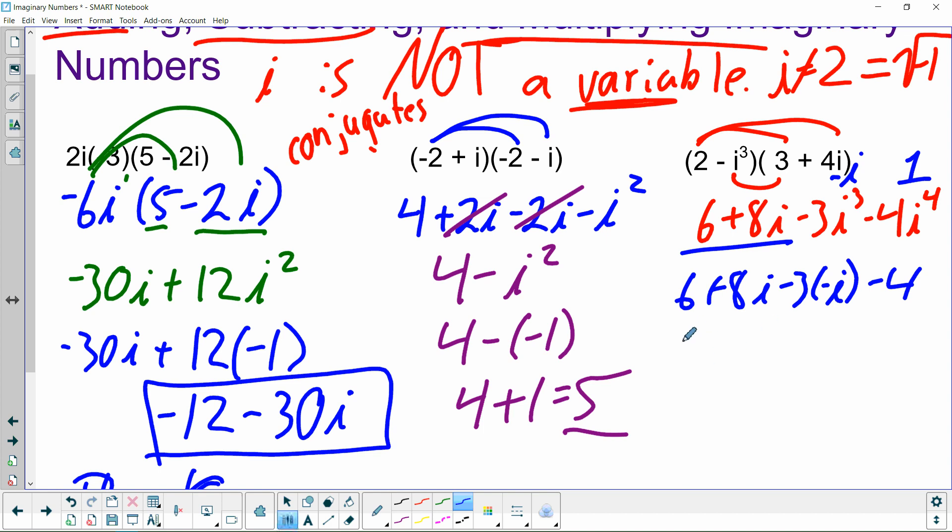Now, the real numbers are like terms, so we need to combine them. So, 6 minus 4 is 2. And then the imaginaries are like terms, and we need to combine them. So, 8i plus 3 more i's is 11i. Make sure it's in standard form with your real part first and your imaginary part second.